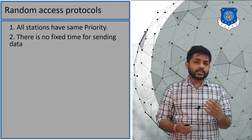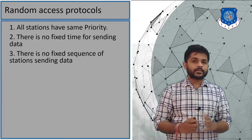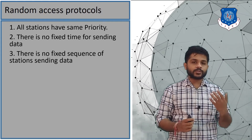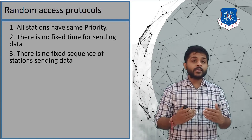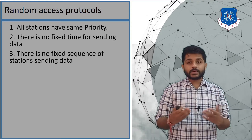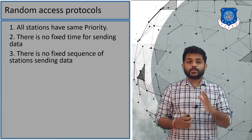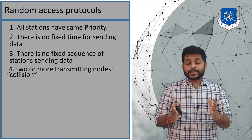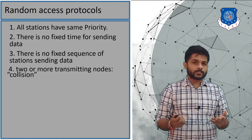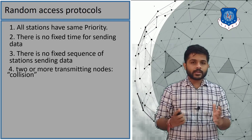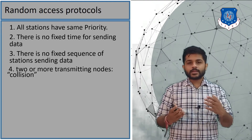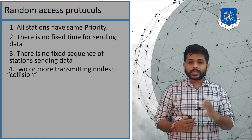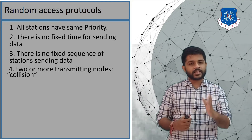In the random access protocol there is no fixed sequence, meaning there is no queue. When there is no queue, any station can send data at any time because they do not have to wait for the previous sender to complete its transmission. Since two or more stations can send data at the same time, it will create a collision. There is a high possibility that all devices sharing the channel will be part of a collision.